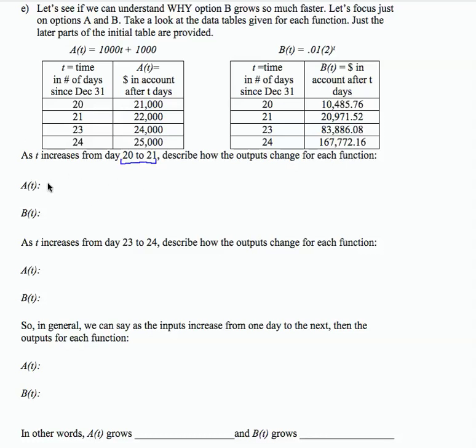So for function A, we are going to take A of 21 minus A of 20, and that's going to equal 22,000 minus 21,000. So we're focusing on this set of data here, and that is a difference of 1,000.